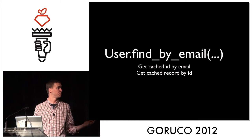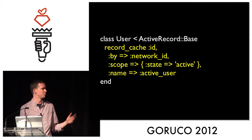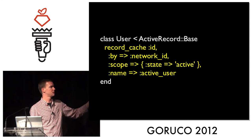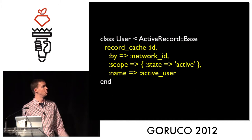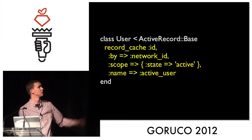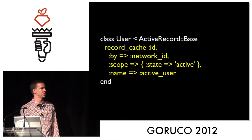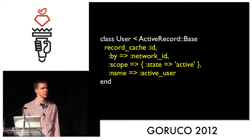Record cache also supports scopes. Here's an example somewhat specific to Yammer — users belong to networks, so we're scoping on active users because that's all we probably care about finding. Calling active users by network ID gives us exactly what we want. We have a name here because normally record cache will infer what you want to call the index based on your `by` field, but with a scope it can't build a magical name for you, so we have to specify a name.